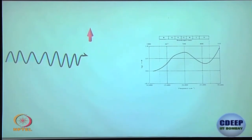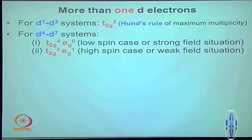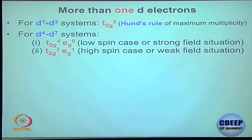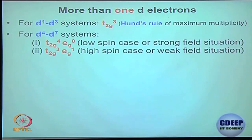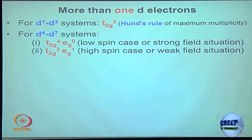In valence bond theory with d²sp³ or sp³d² hybridization, there is no way to explain where the color comes from. For systems with more than one d electron — d2, d3, and beyond — Hund's rule still applies initially, and there can be multiple transitions giving multiple peaks in the spectrum.